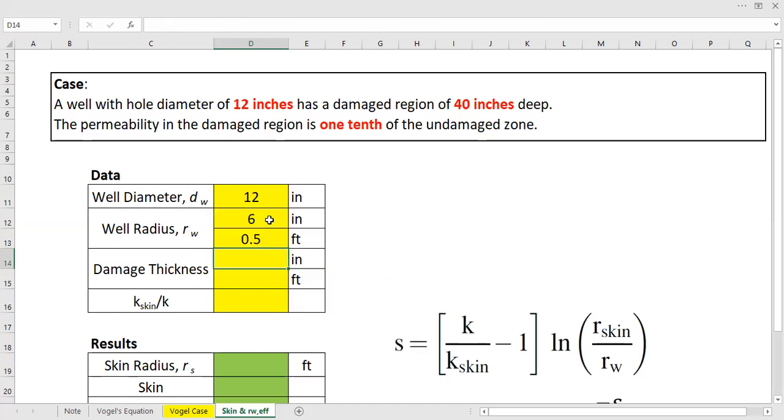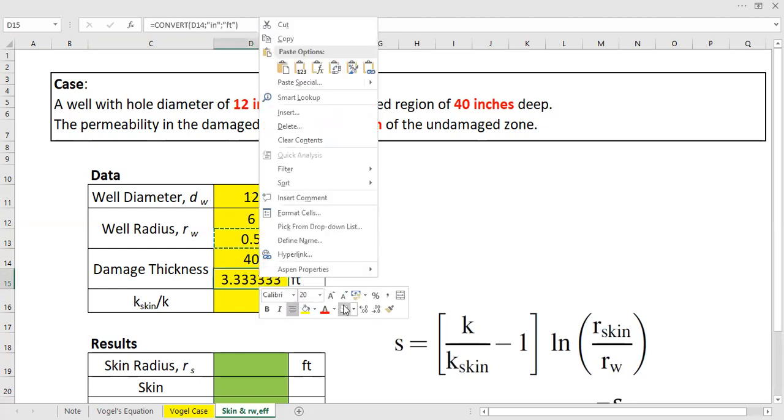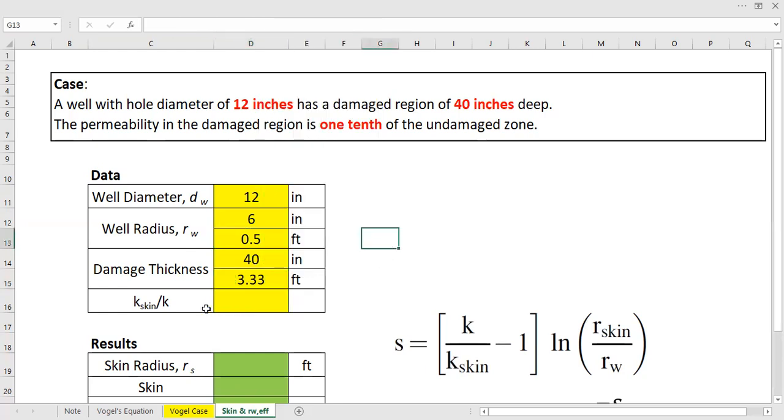All right, 0.5 feet. And the damage thickness is here, 40 inches deep. 40, and again we need to convert it to feet. I can copy this one with the formula in it, copy and then paste it here. All right, so it is about 3.33 feet, the damage thickness. And the case skin, we need to calculate this one, is of course 0.1. So we have all the data we need to perform the calculation.